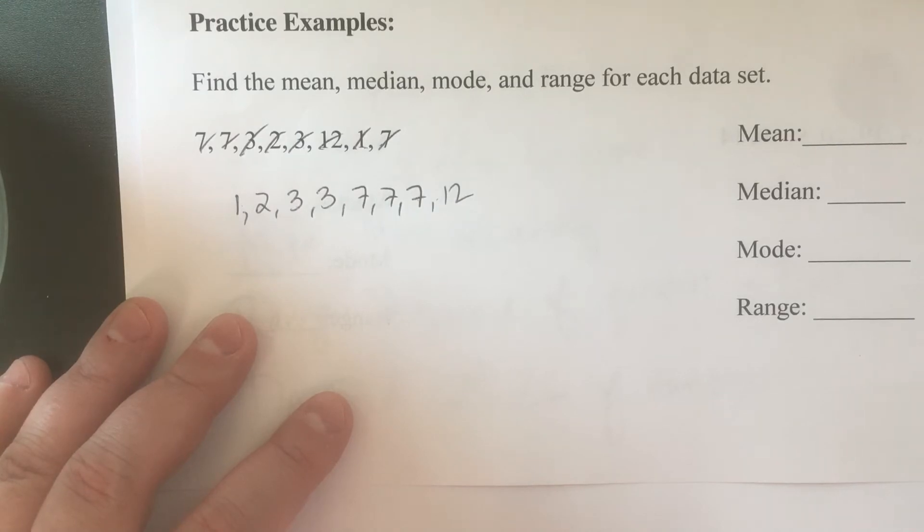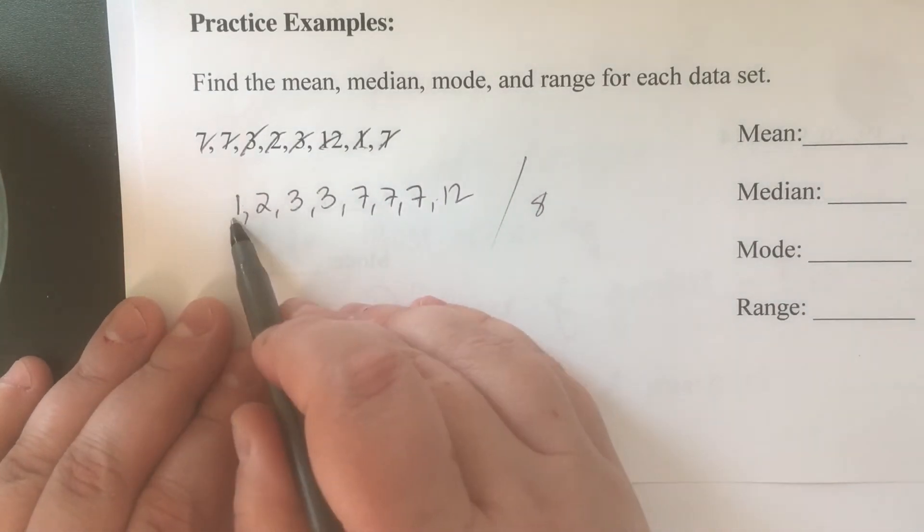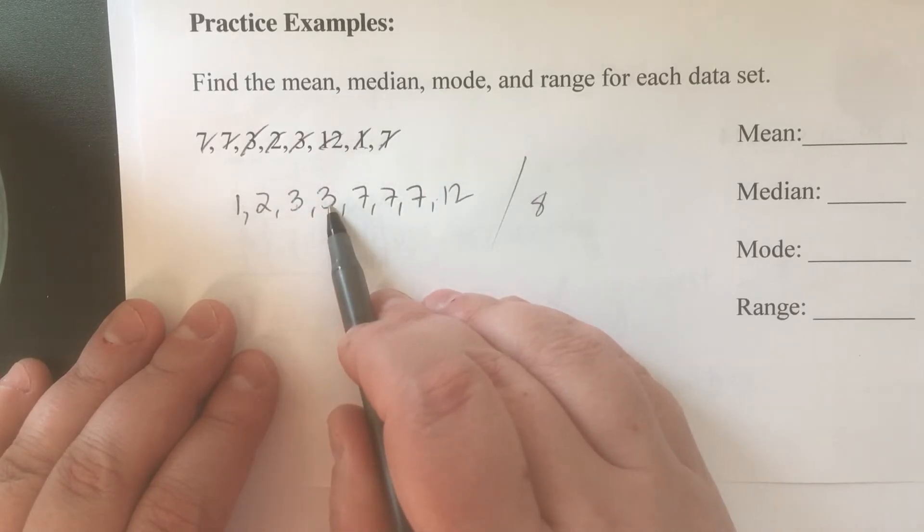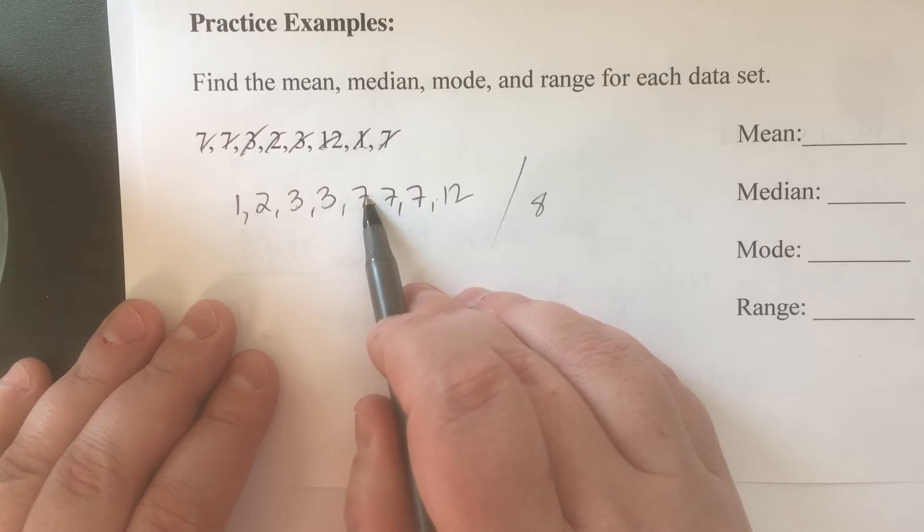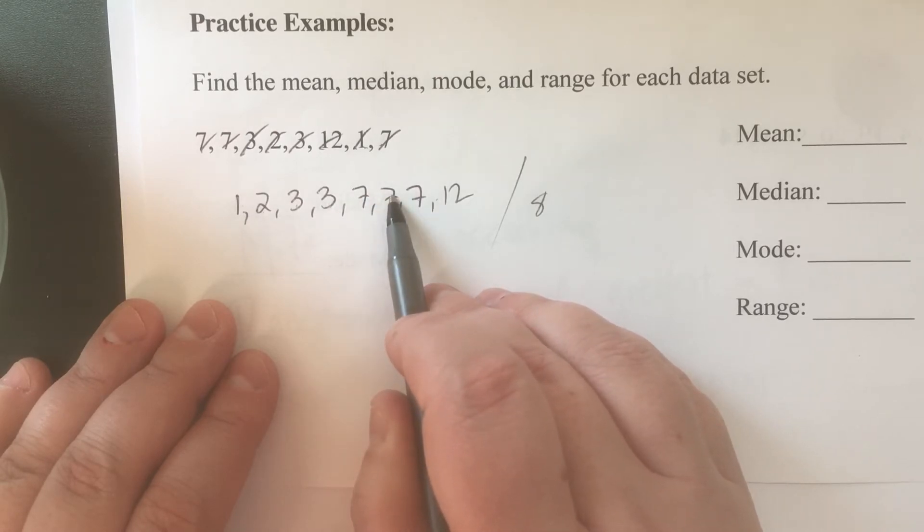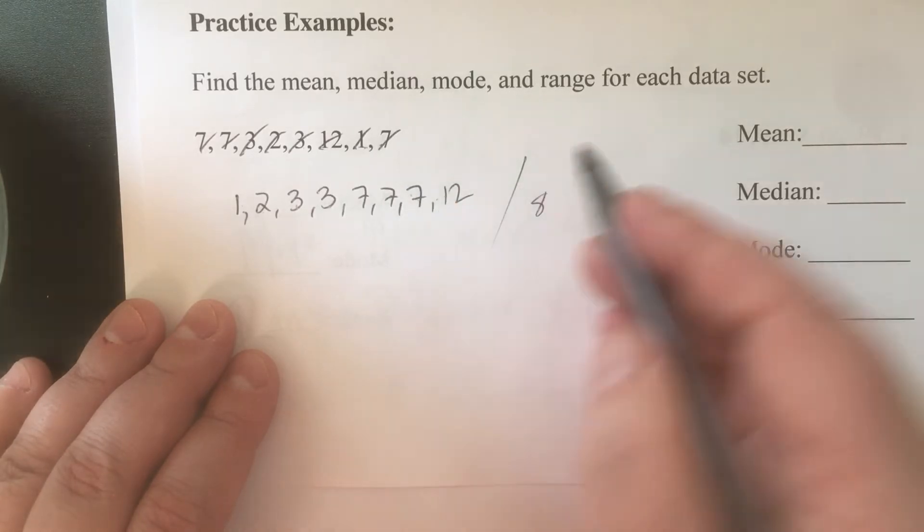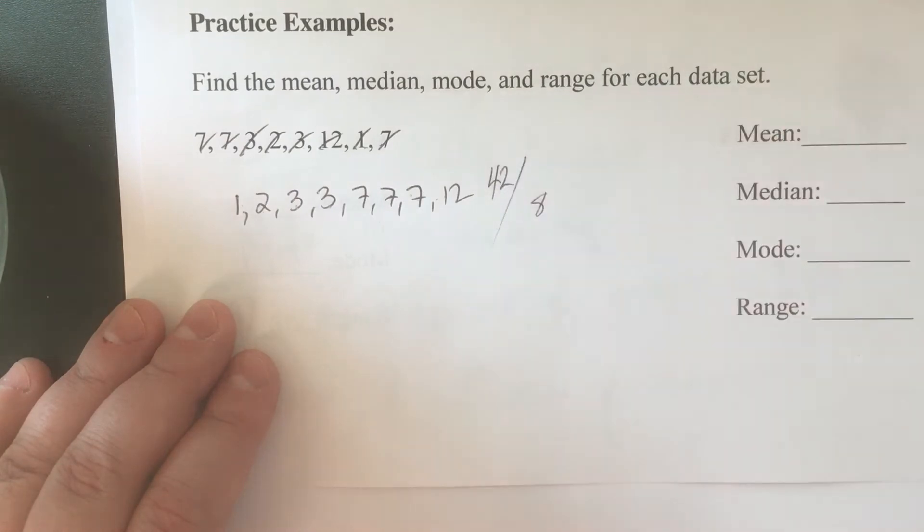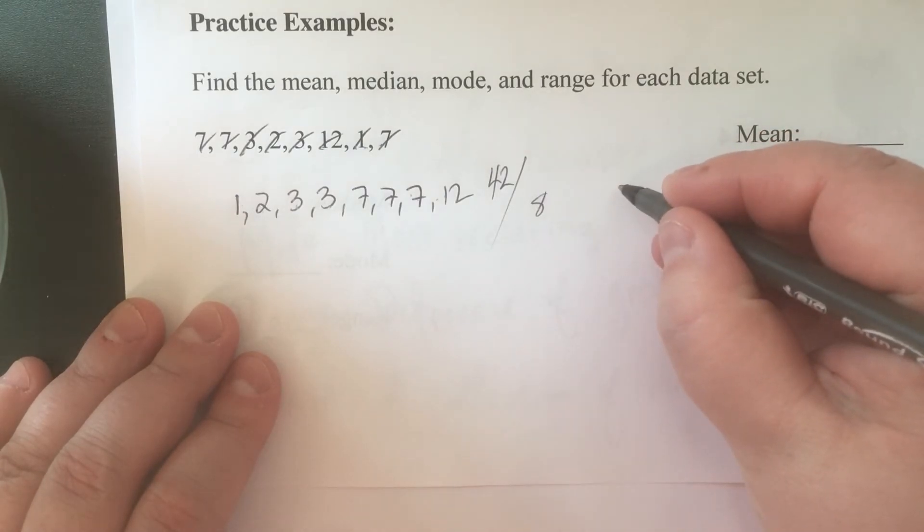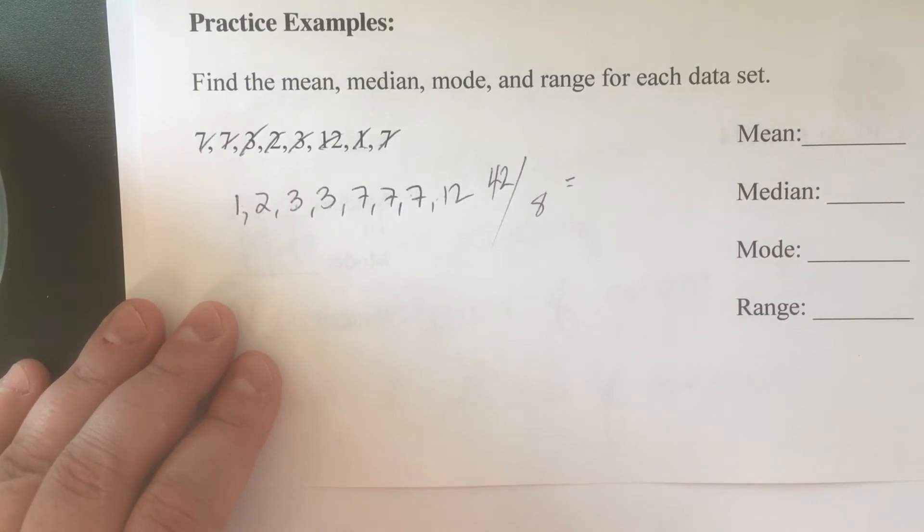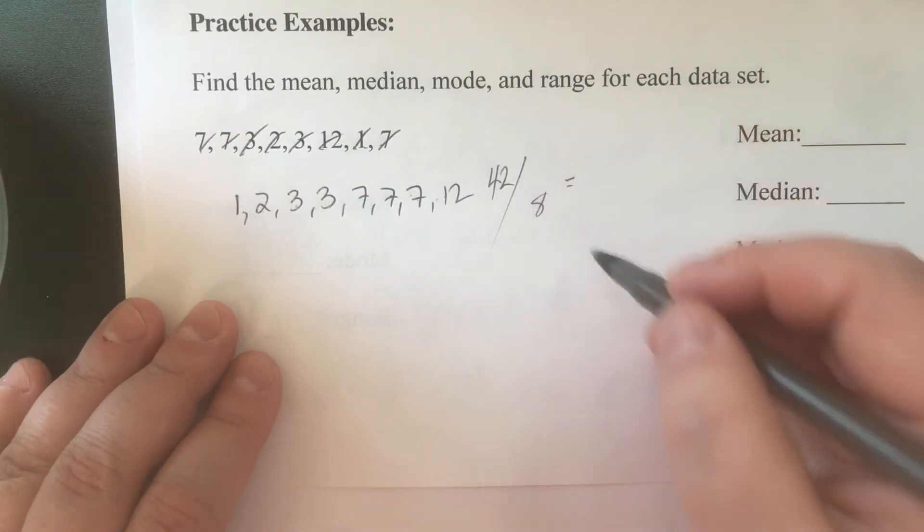Where am I getting 8? There are 8 numbers. So 1 plus 2 is 3, plus 3 is 6, plus 3 is 9, plus 7 is 16, plus 7 is 23, plus 7 is 30, plus 12 is 42.